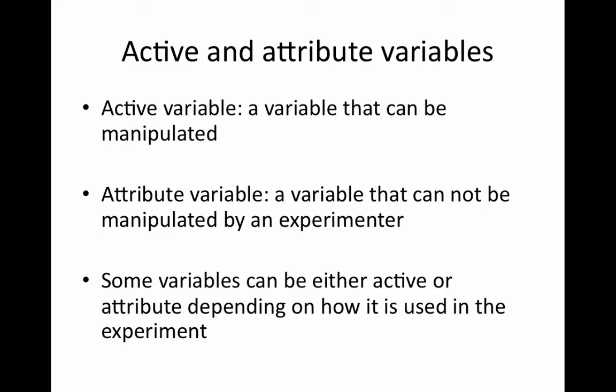An active variable is a variable that can be manipulated. An attribute variable is a variable that cannot be manipulated by an experimenter. Some variables can be either active or attribute depending on how they are used in the experiment.